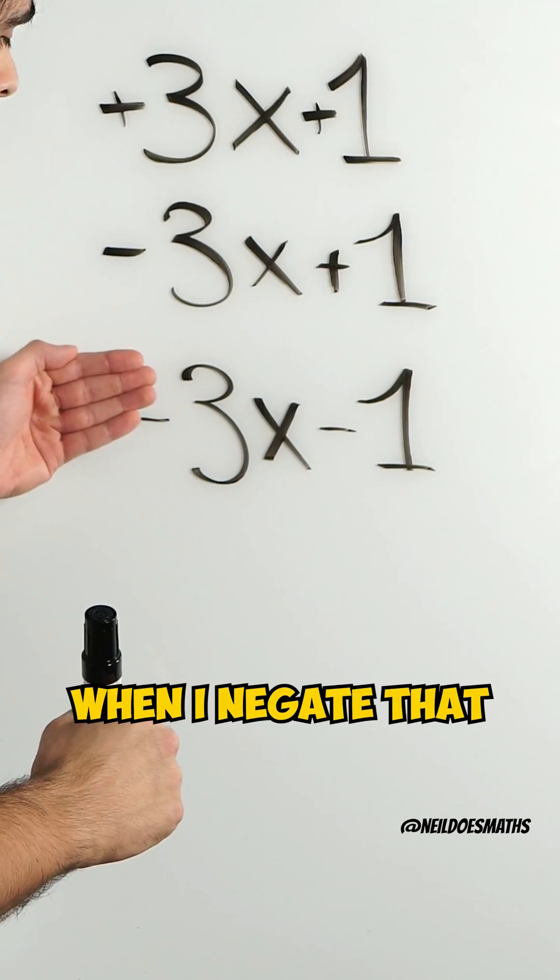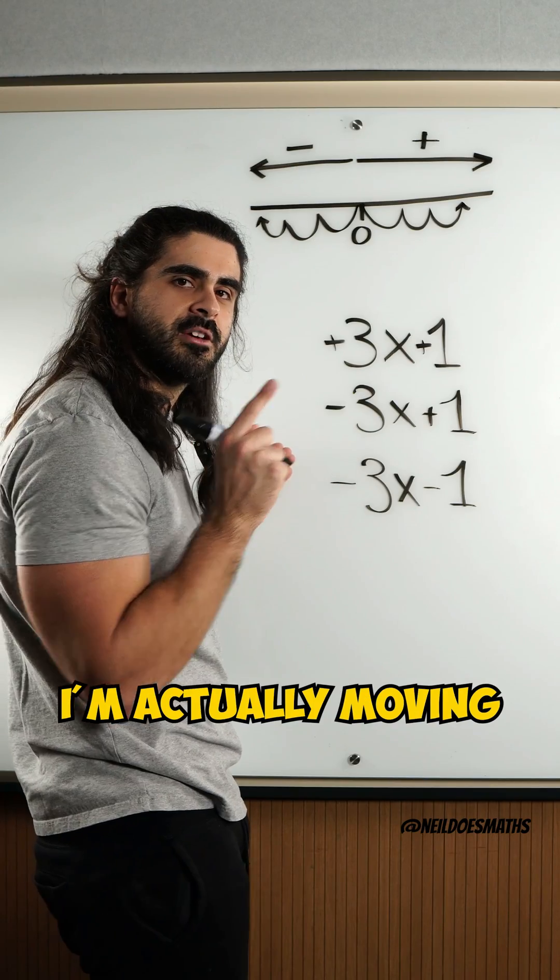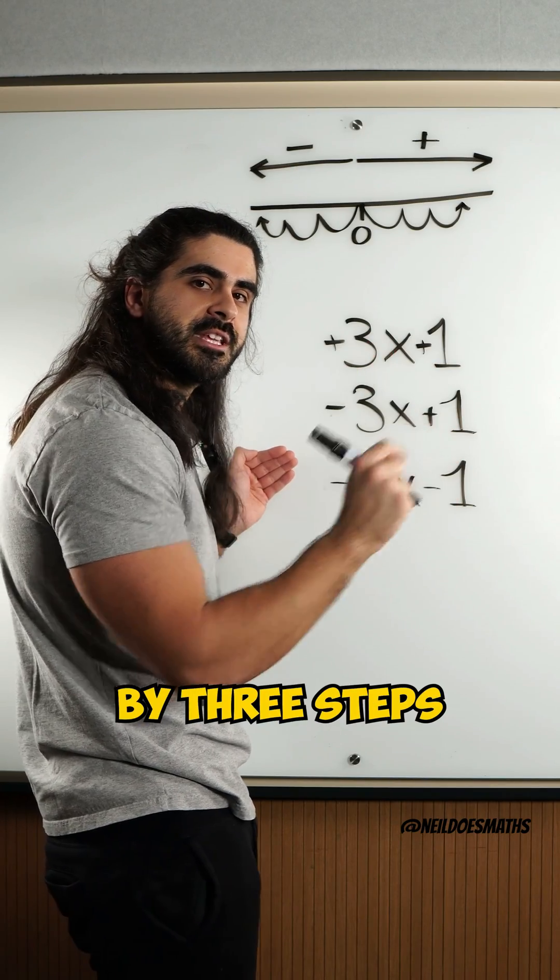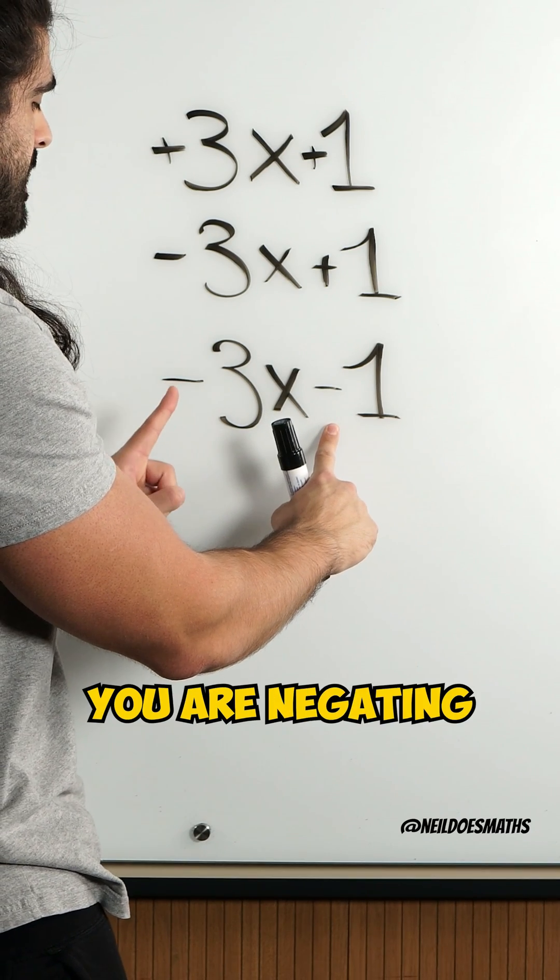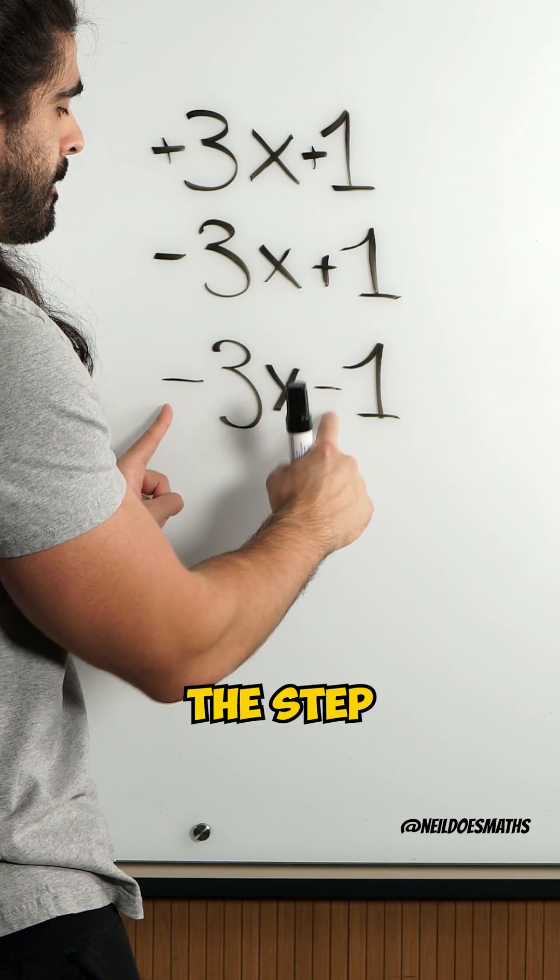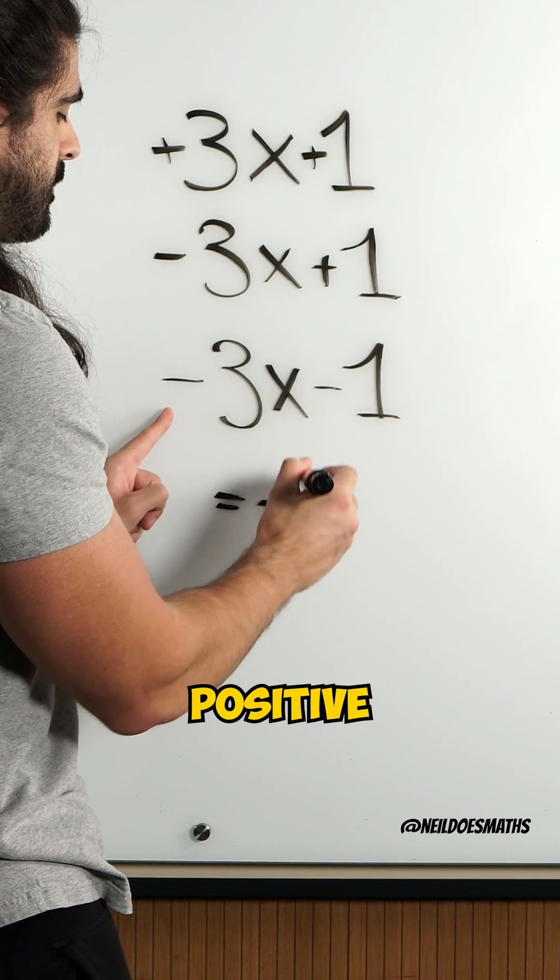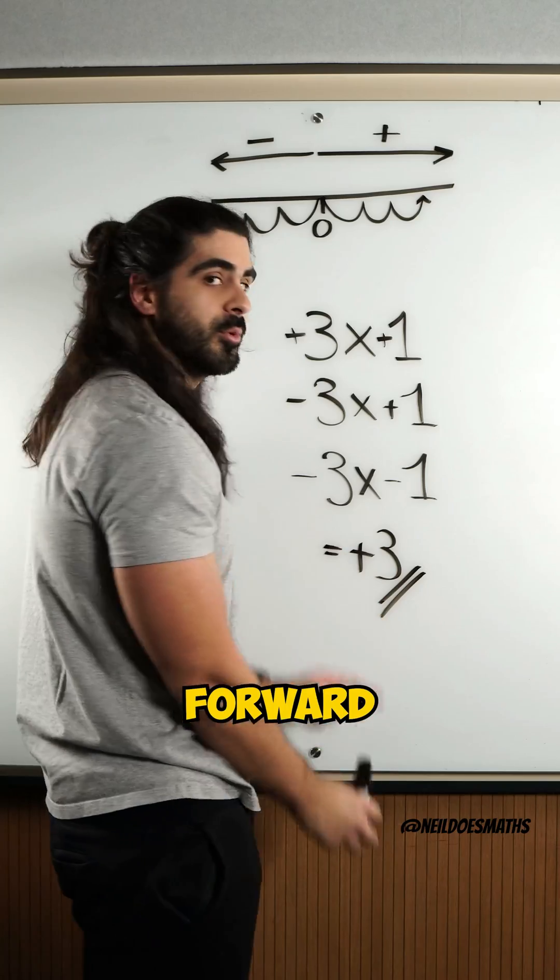However, when I negate that, I'm actually moving forward by 3 steps. So, 2 negatives means you are negating the step back and it becomes positive. 3 steps forward.